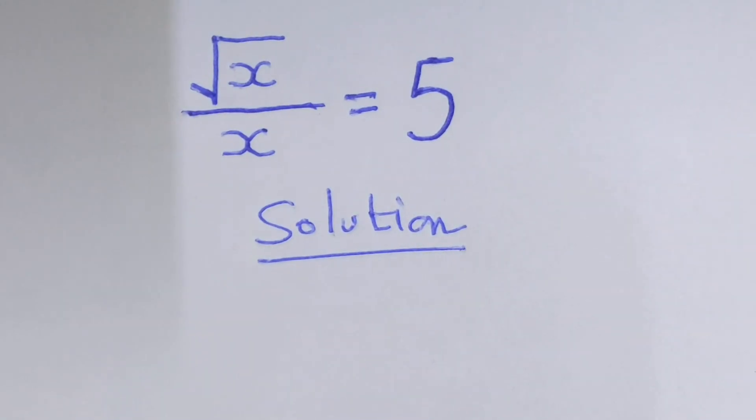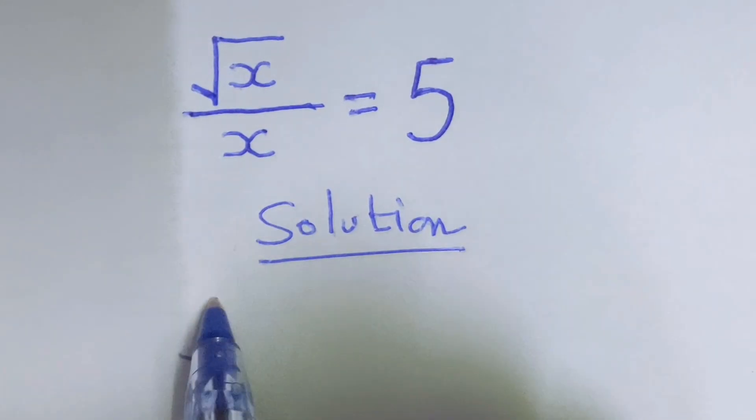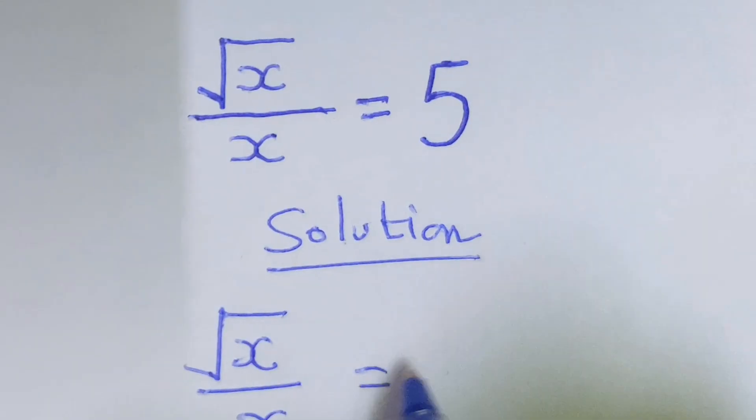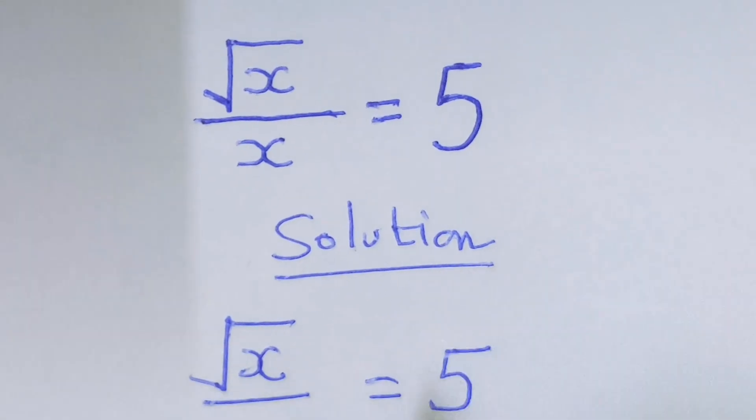By copy, what we have: we have square root of x over x equal to 5.